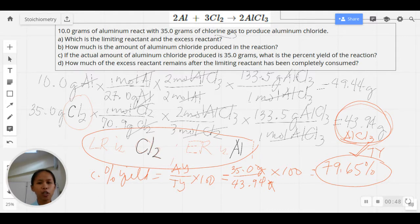There's another additional question which is on Part D. It says: how much of the excess reactant remains after the limiting reactant has been completely consumed? Take note that in Part D we are focusing our attention to the excess reactant because the excess reactant will not all be completely consumed in the reaction. Only the LR will all be used up, but a portion of your ER will only be used while another portion will be the surplus.